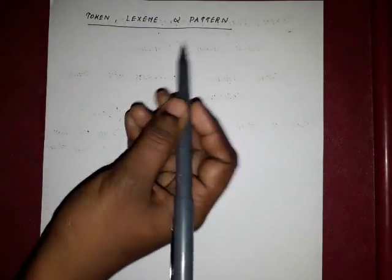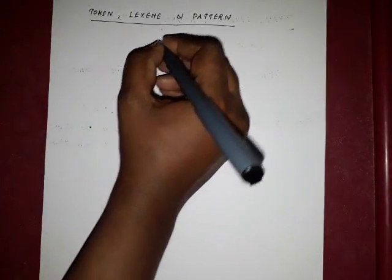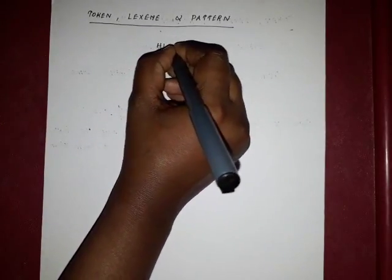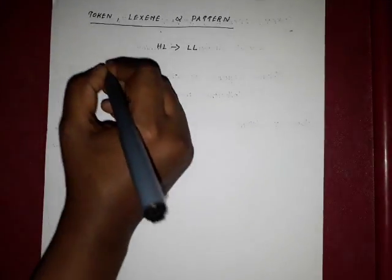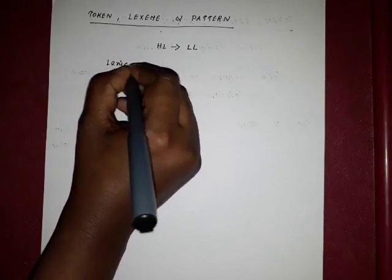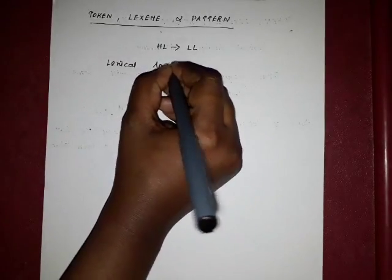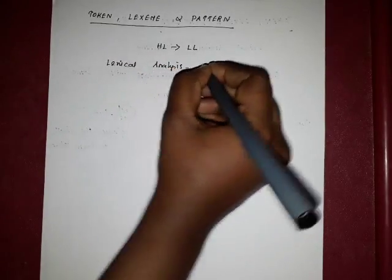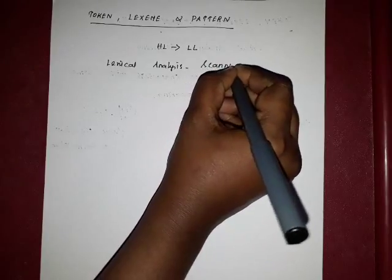Welcome to our channel INTEC. Today I am going to deliver the lecture on Token, Lexeme, and Pattern. In a compiler there will be six phases to convert the high level language into low level or machine level language. The first phase is lexical analysis, which is also called scanning, and it is used to read the input string from left to right to identify the token.